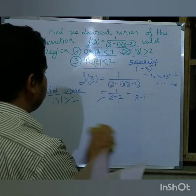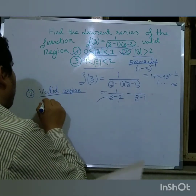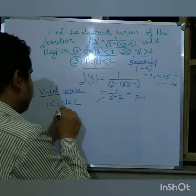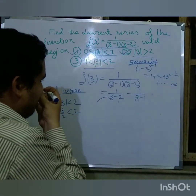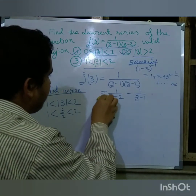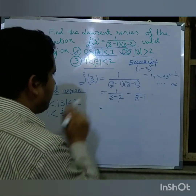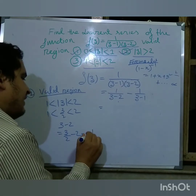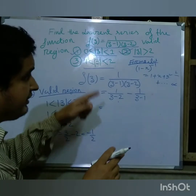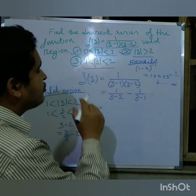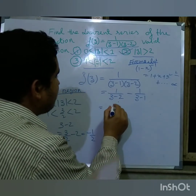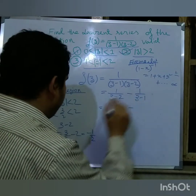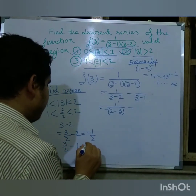The next valid region is 1 less than |z| less than 2. I take z equals 3/2 as a test value. Substituting into (z minus 2): 3/2 minus 2 equals minus one-half, which is negative, so I write minus(2 minus z). For (z minus 1): 3/2 minus 1 equals one-half, which is positive, so I write z times (1 minus 1/z).